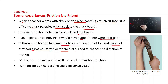If there is no friction between the tires of automobiles and the road, they could not be started, stopped, or turned to change direction. We cannot fix a nail in a wall without friction, or tie a knot without friction. No building could be constructed without friction. These are examples from daily life where friction is desirable — friction is a friend.